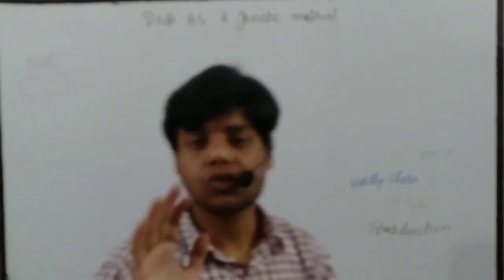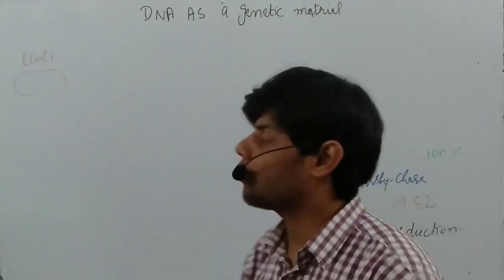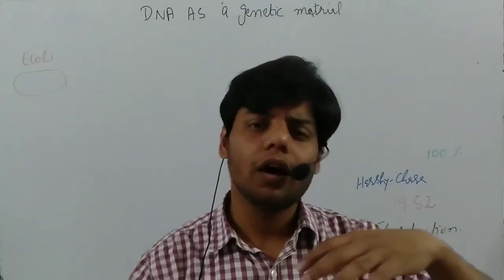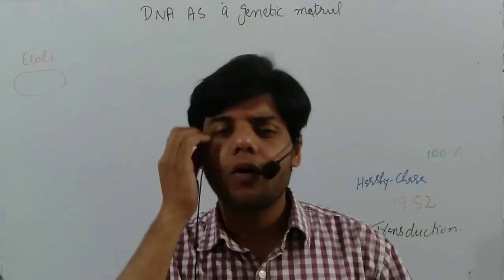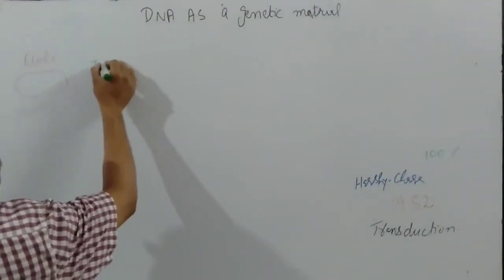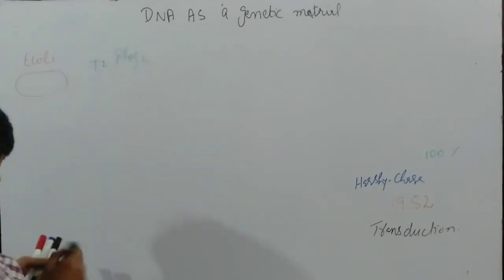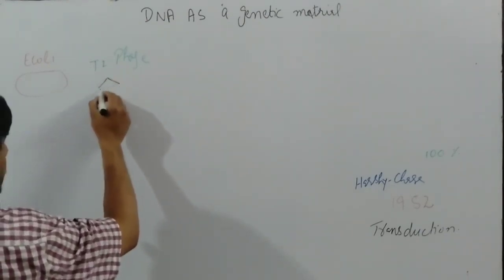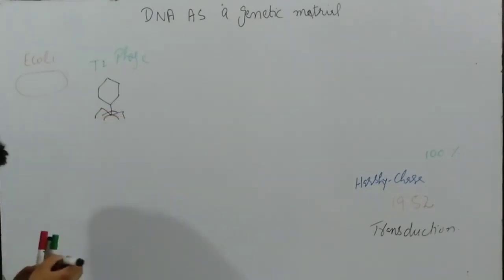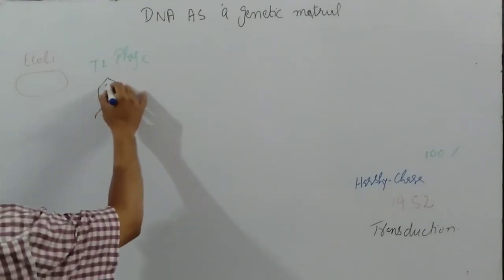Now what actually did Hershey and Chase do? They took a bacterial cell — specifically E. coli. E. coli was the most widely used bacteria and every scientist uses E. coli for experiments because it contains all the necessary substances, enzymes, and things needed. For the bacteriophage, they used a virus which we call T2 Phage. The structure of this virus will look like a bacteriophage with its genetic material inside.